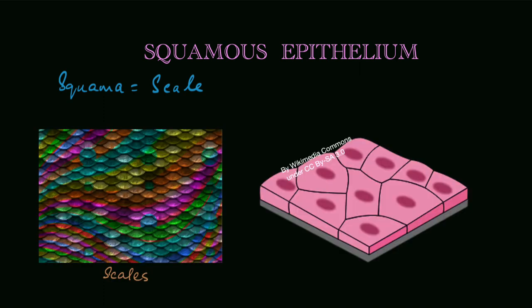Squamous epithelium is composed of flat cells. The cells are as flat as scales, that's why they are called squamous epithelium. Since the cells are so flat, substances can easily diffuse through them in both directions, and that's why they can be found in capillaries and alveoli.